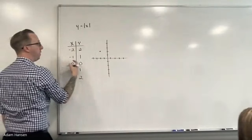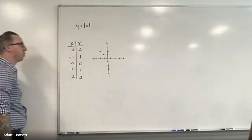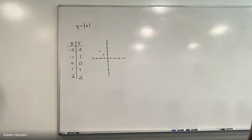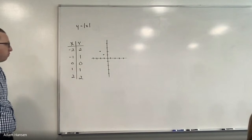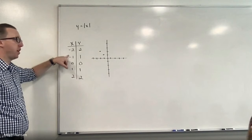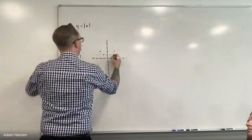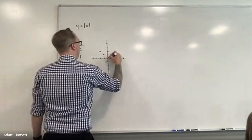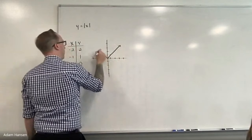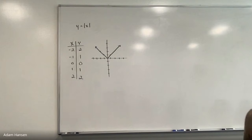Let's move to the next point: negative one, one — left one, up one. Zero, zero is the origin. There's the first half of points. Where's one, one going to be? From the origin, right one, up one — because now it's positive one instead of negative one for the x-coordinate. Right two, up two for the next. Connecting these dots, there it is — the graph of y equals the absolute value of x, formed by plotting those individual points.